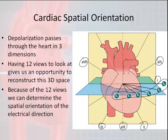Because of these 12 views, we can determine the spatial orientation of the electrical direction. Just because the electrical direction might be outside of its normal pathway does not necessarily mean it's a bad thing. Most of the time it tells us something is going on — it could be a physiologic change, or it could be a pathologic change, which would be bad.